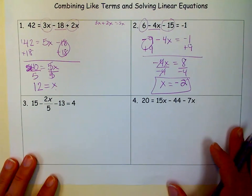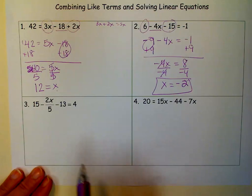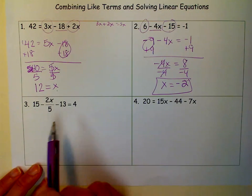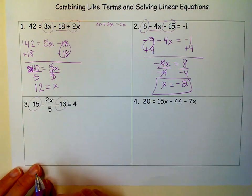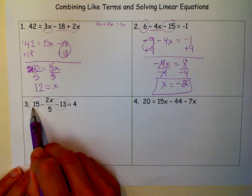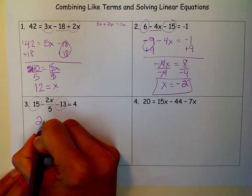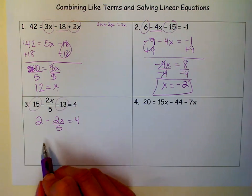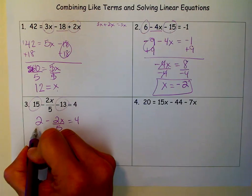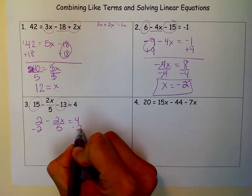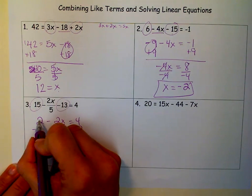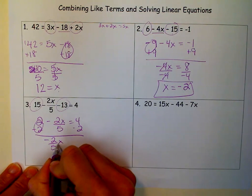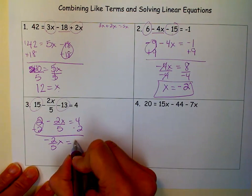Over here, constant term, x term, constant term. So I need to combine these constant terms. 15 minus 13 is 2. Now, I want to get rid of the constant term first, so I'm going to minus 2 from both sides. And that's 0. And 0 minus this is just this. And 4 minus 2 is 2.